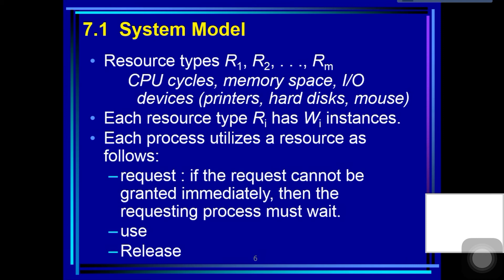CPU cycles, files, and I/O devices are examples of resource types.